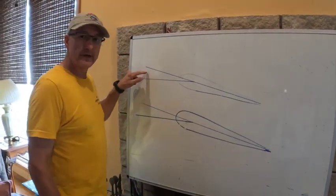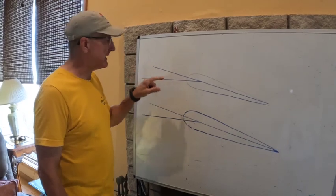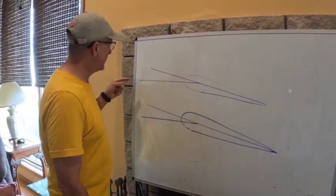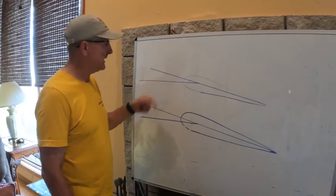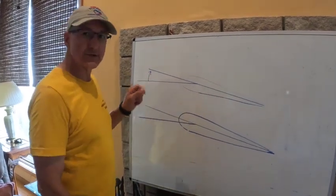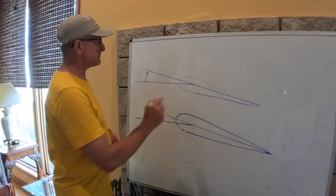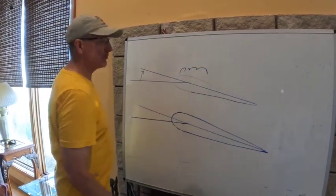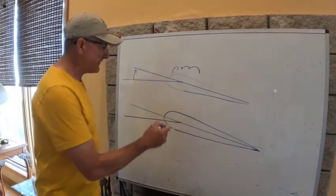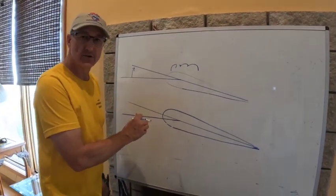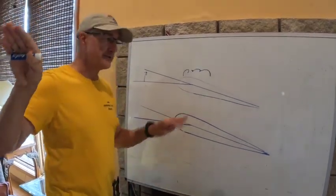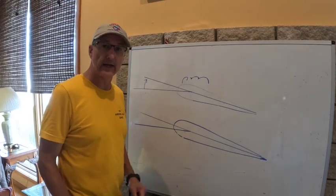Here's what's happening. In basic aerodynamics, the angle of attack is the difference between the chord line of the wing and the relative airflow to the wing. When we reach a stalled situation and the wing is stalled, we've exceeded the critical angle of attack. That wing is going to start to fall. But if the other wing has not stalled, it's going to continue to fly and it's going to climb as the other one falls.